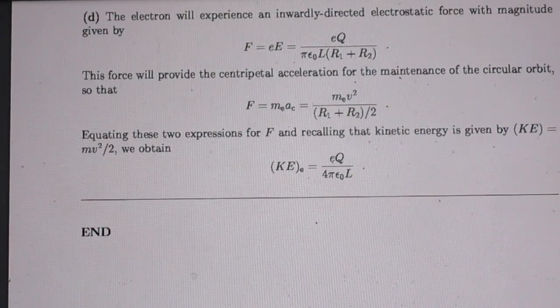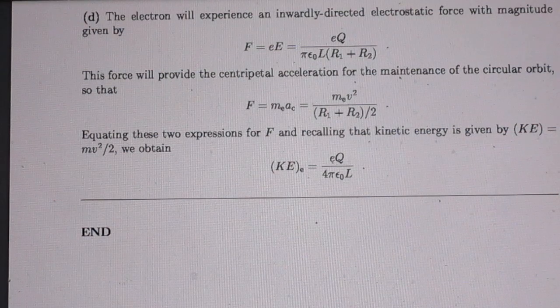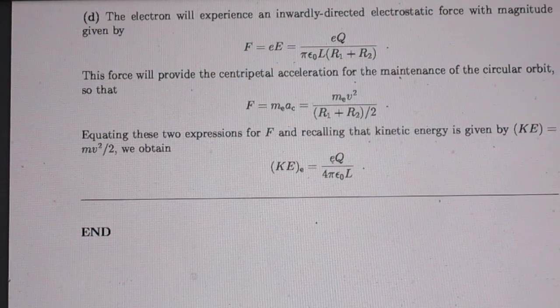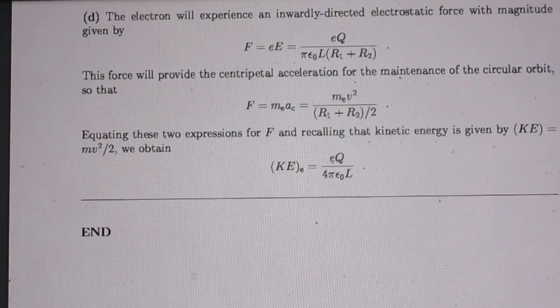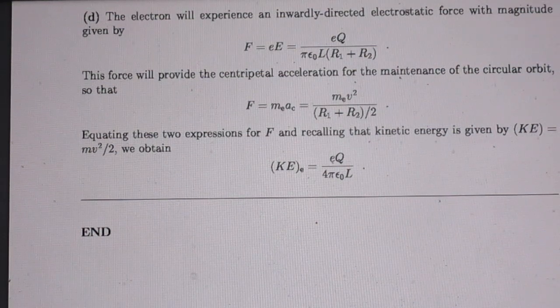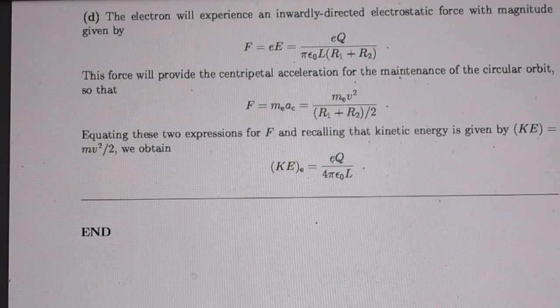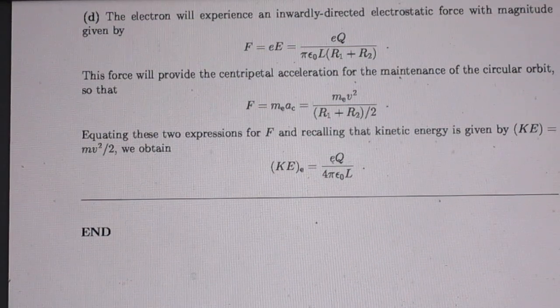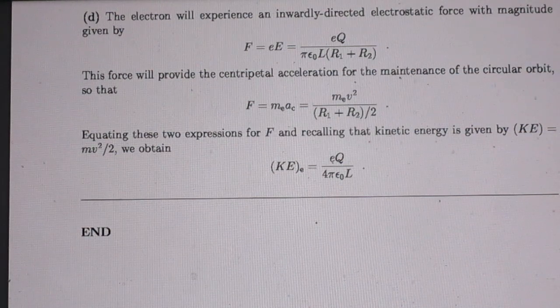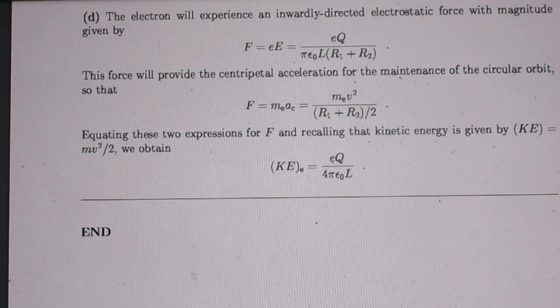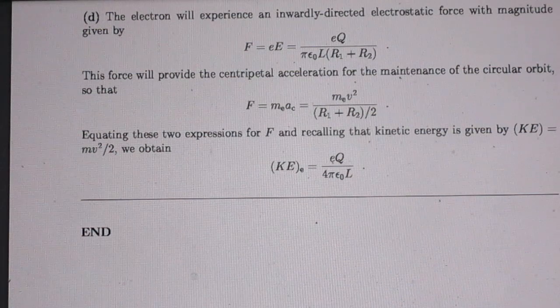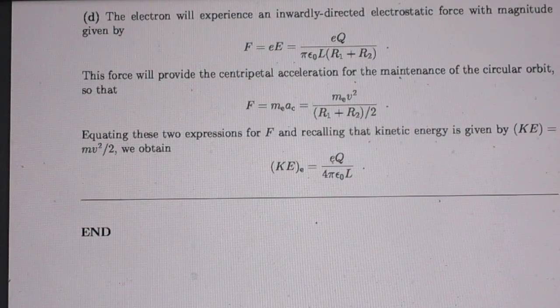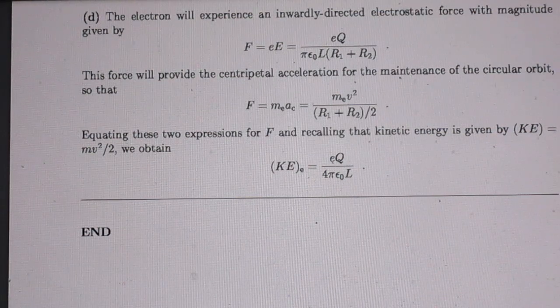Now the last question is more difficult. So an electron is now circling around between the two cylinders at the radius R1 plus R2 divided by 2. But that's a given. And you're now being asked what is the kinetic energy of that electron.